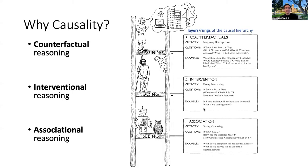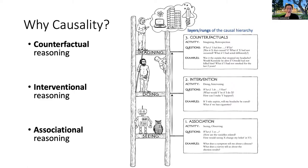Let me get started by showing the causal hierarchy picture again — what people also refer to as the causal ladder. The key thing is that we have three types of reasoning: associational, interventional, and counterfactual. Each is triggered by something different. Associational reasoning is triggered by observing something. Interventional reasoning is triggered by actions or interventions. Counterfactual reasoning is about imagining alternate scenarios that are normally conflicting. As you move up the ladder, reasoning becomes more sophisticated, but also more information is needed.